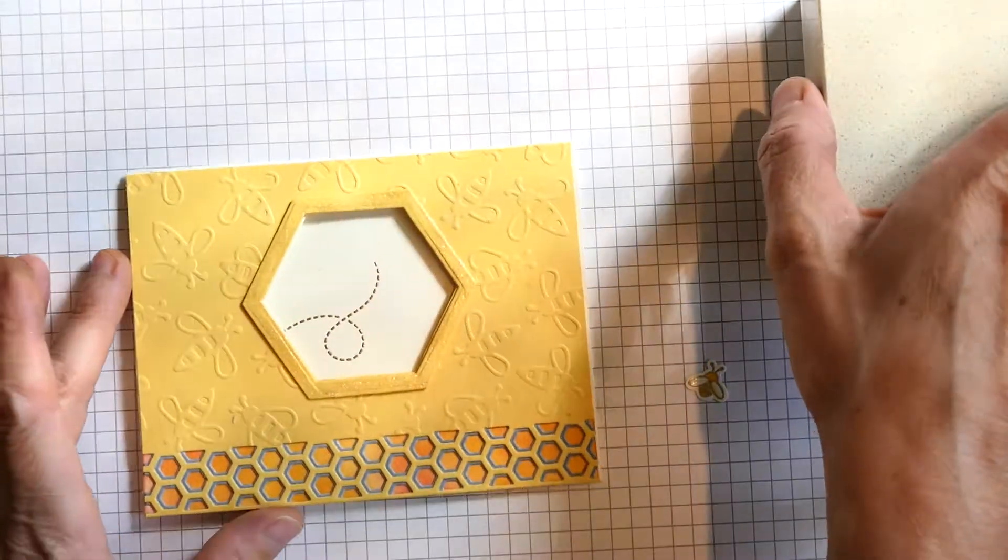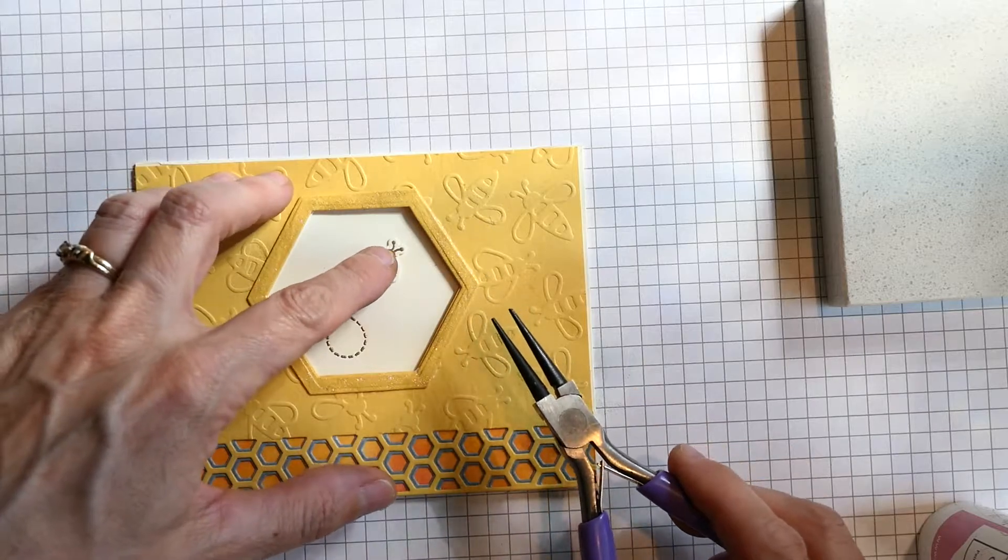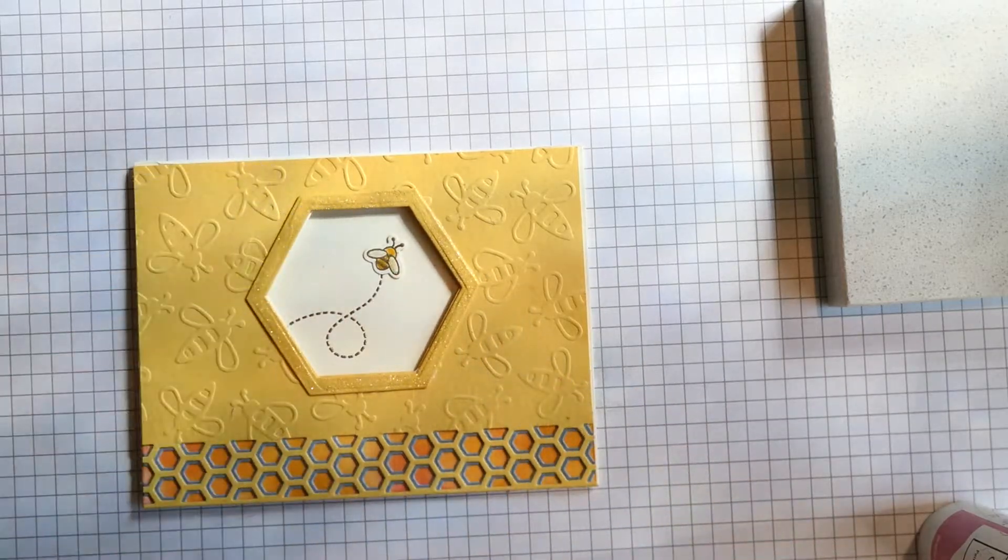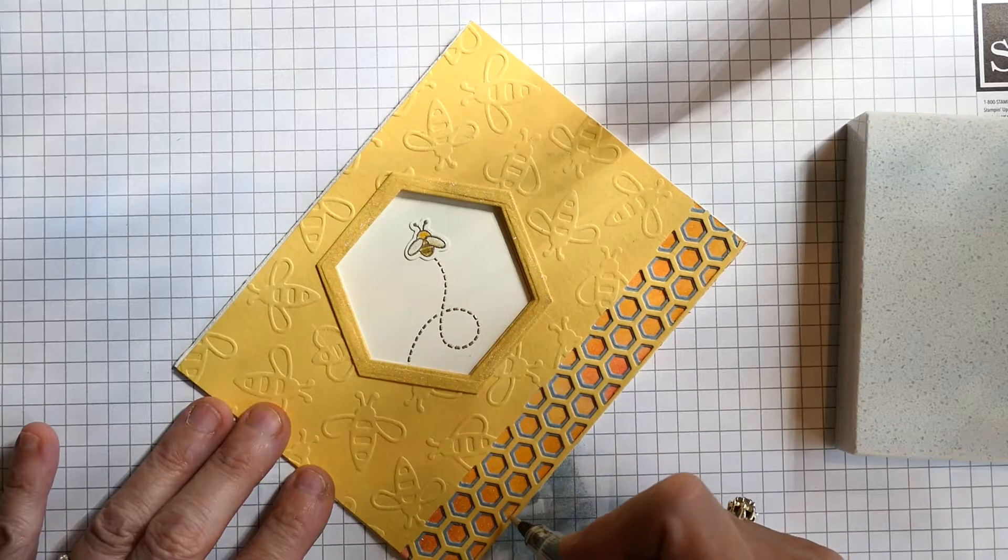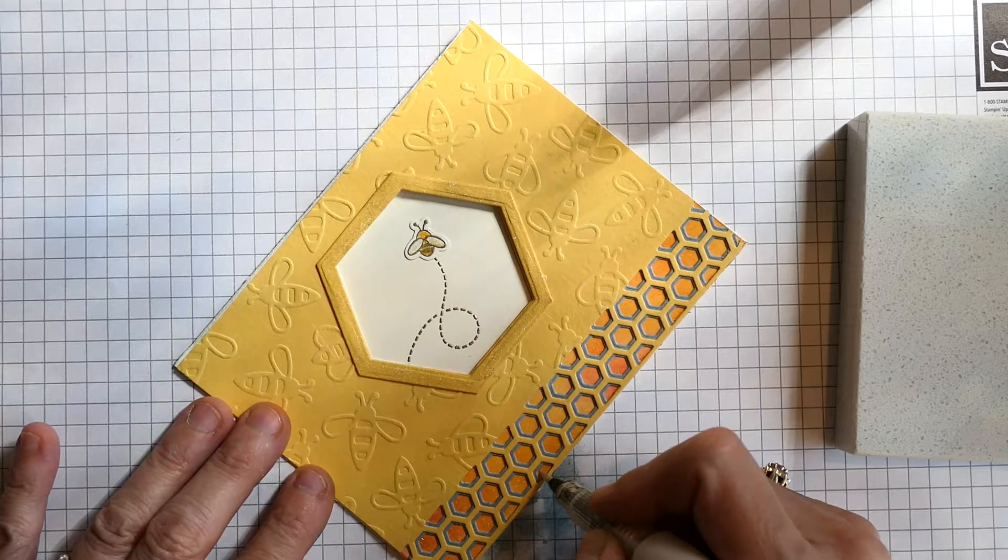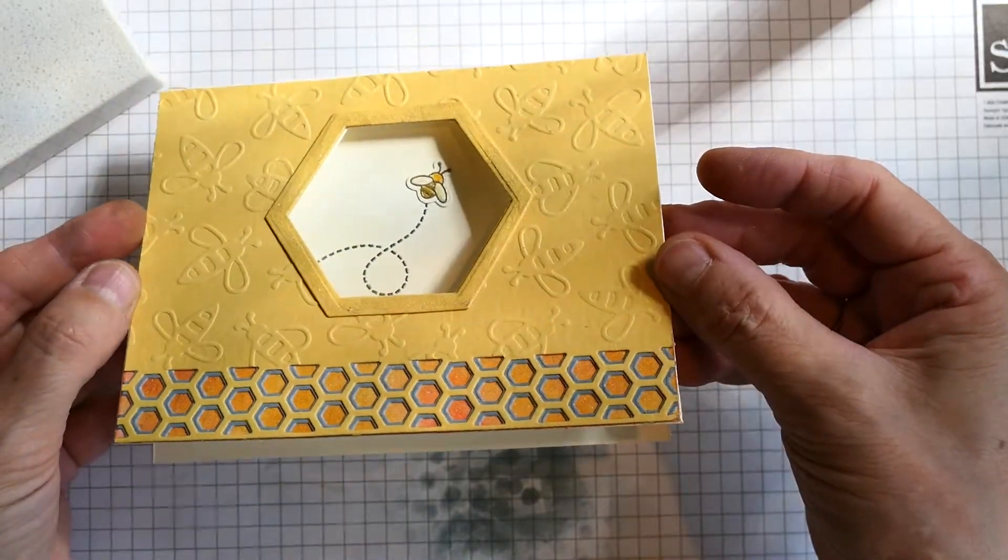Once the Wink of Stella was dry, I glued everything on and glued the little bee on. I thought about raising it up with a pop dot underneath, but I glued it flat. The Wink of Stella was also used to give a little bit of shimmer to the hexagon layers.